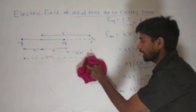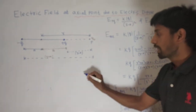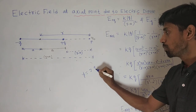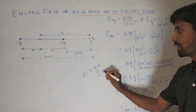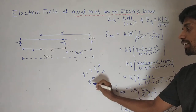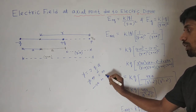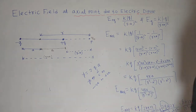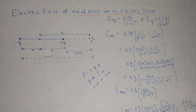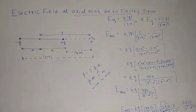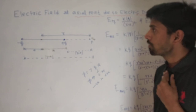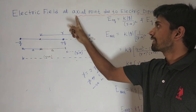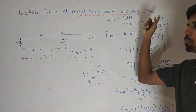Dipole moment formula is rho equal to 2QA. A is distance, so its unit is coulomb times meter. It is a vector quantity and its direction is always from negative to positive. Now, come to the point — we have to find the electric field at the axial point due to an electric dipole.